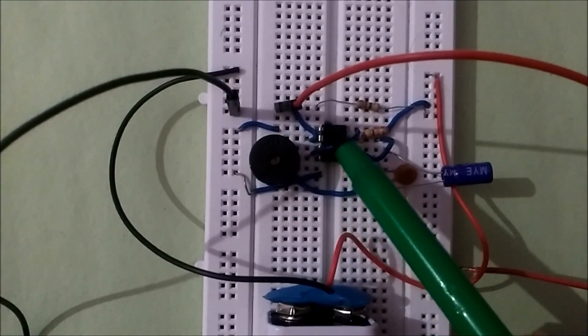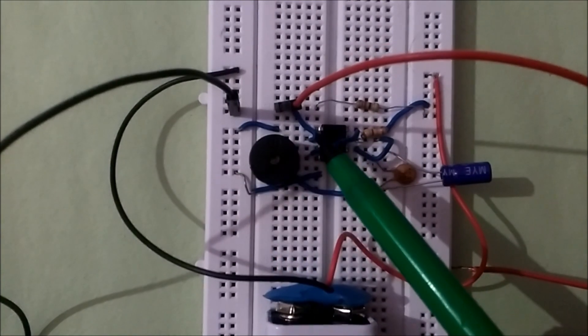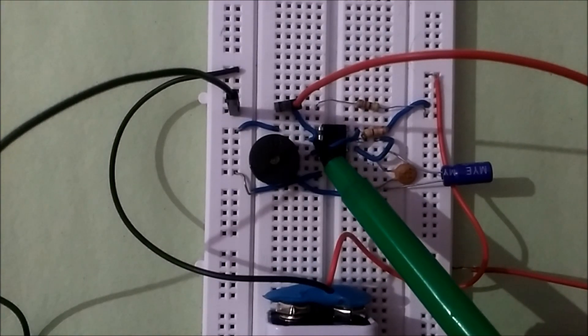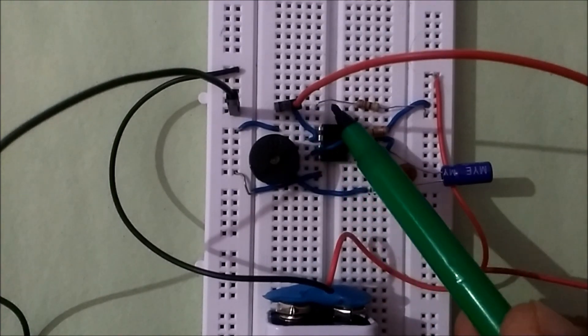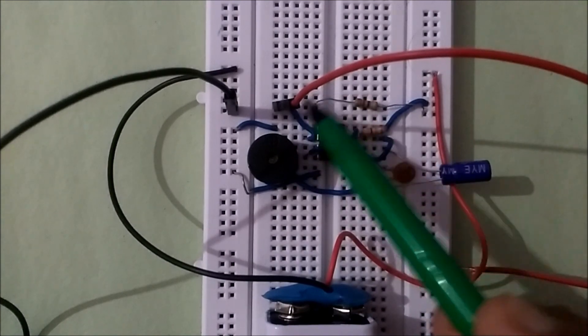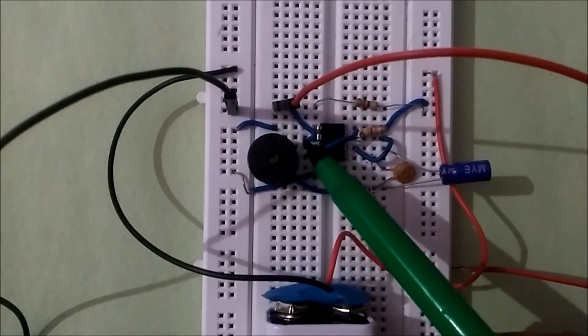This side first pin, which is ground, is directly connected to ground. This second pin, which is trigger, is directly connected to a 4.7k resistor and then to plus VCC. Here you can see from plus VCC, 4.7k, and then to 2nd pin.